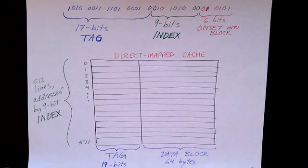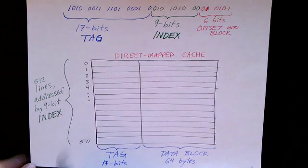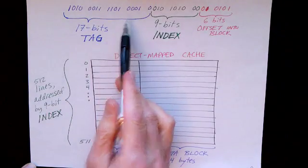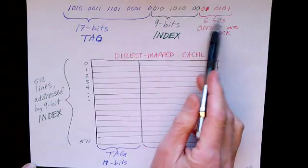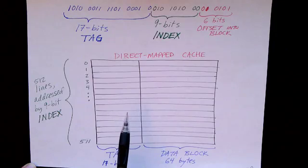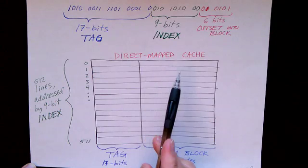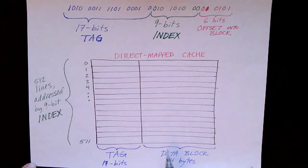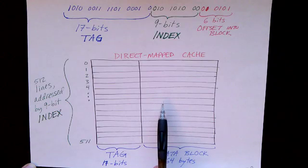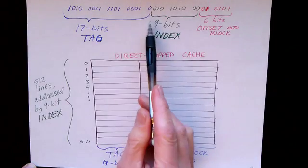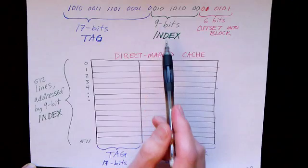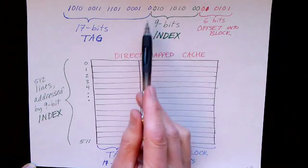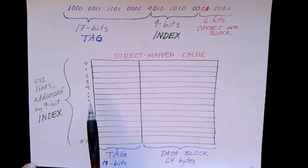So here's how the direct map cache system works. First of all, let's look at our address. It's 32 bits. And as before, the last 6 bits will be used to choose the byte from within the block. Each block has 64 bytes, so it takes 6 bits to pick out the byte of interest. But here's where it differs. We're using these 9 bits as an index. And the remaining 17 bits are a tag.